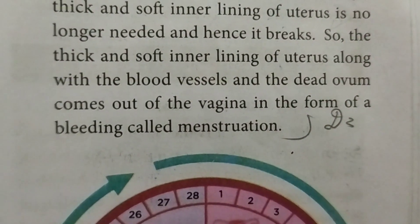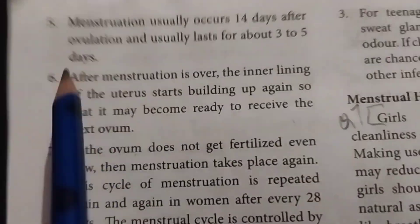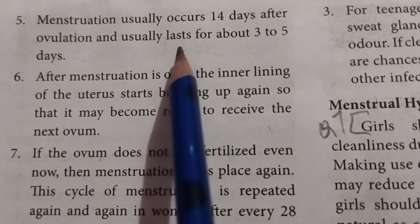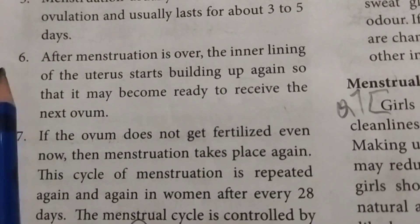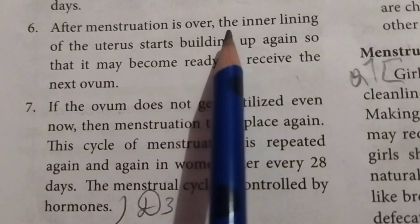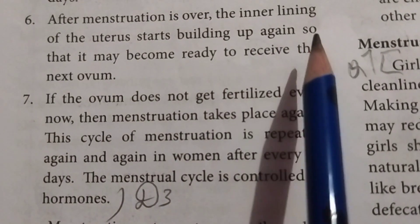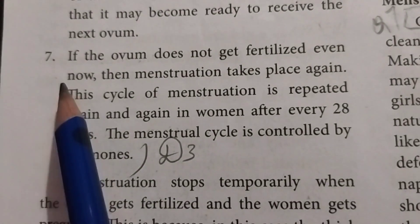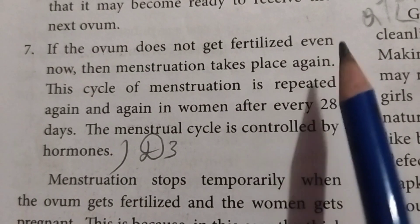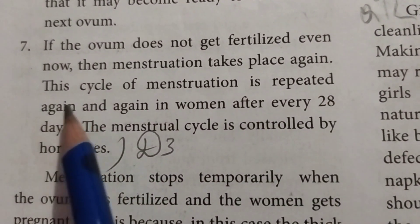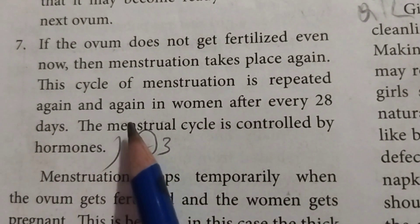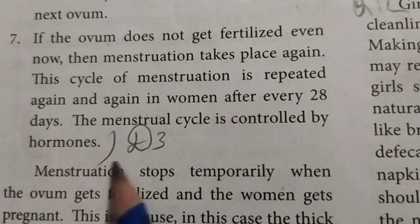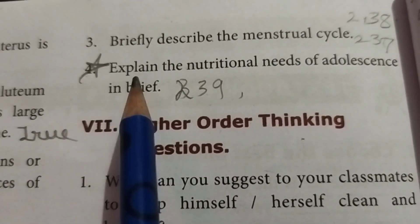Fifth point: Menstruation usually occurs 14 days after ovulation and usually lasts for about 3 to 5 days. Sixth point: After menstruation, the inner lining of the uterus starts building up again to become ready to receive the next ovum. Seventh point: If the ovum does not get fertilized again, menstruation takes place again. The cycle of menstruation is repeated every 28 days. The menstrual cycle is controlled by hormones. Up to this, third detailed answer.